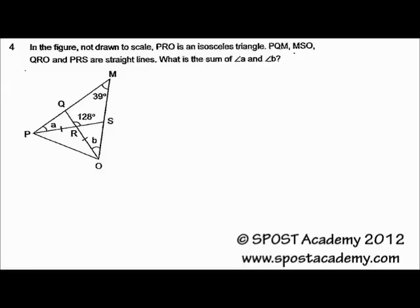In the figure not drawn to scale, PRO is an isosceles triangle. PQM, MSO, QRO, and PRS are straight lines. What is the sum of angle A and angle B?